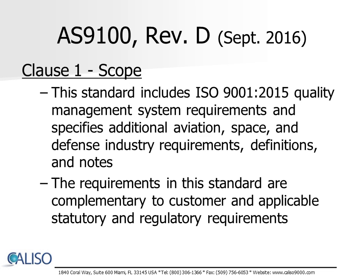Clause 1 defines the scope of this standard as one that specifies requirements for a quality management system when an organization needs to demonstrate its ability to consistently provide products and services that meet customer and applicable statutory and regulatory requirements, and aims to enhance customer satisfaction through the effective application of the system, including processes for improvement of the system and the assurance of conformity to customer and applicable statutory and regulatory requirements.